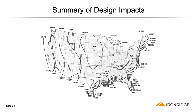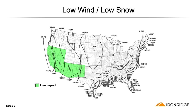Here's a summary of impacts that solar designers will contend with. If you're installing in a low-wind, low-snow state like California, Arizona, New Mexico, or Nevada, and you've standardized on 4-foot spans, there will be little to no impact on your designs. If you're maximizing your spans in those states to 6 feet, there could be an impact, but minimal.